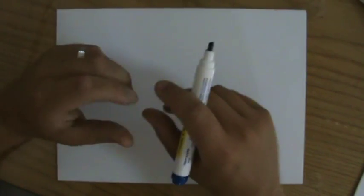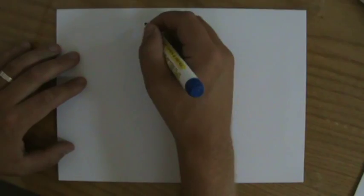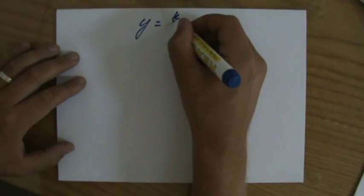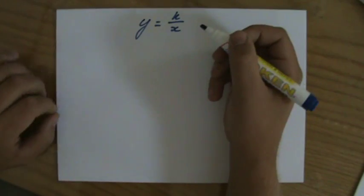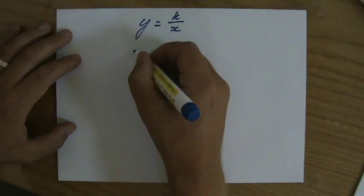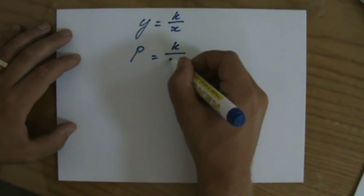Now because it is inverse proportion, we know that we should write down the general formula Y equals a constant over X. But they don't talk about Y and X, they talk about pressure P and volume V. So let's write down the pressure equals the constant over V.